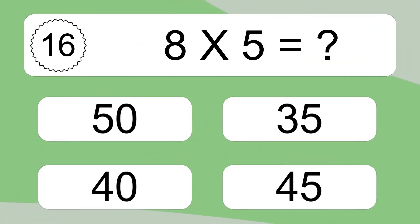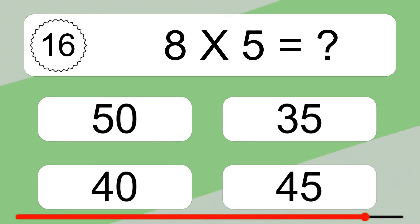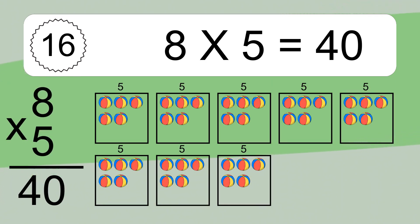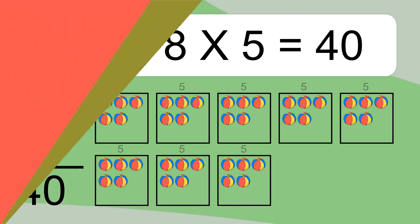Eight times five equals what? Eight times five equals forty. We have eight boxes and each box has five colorful balls inside. If you count all the balls in all the boxes together, you will have eight times five balls. This equals forty balls.